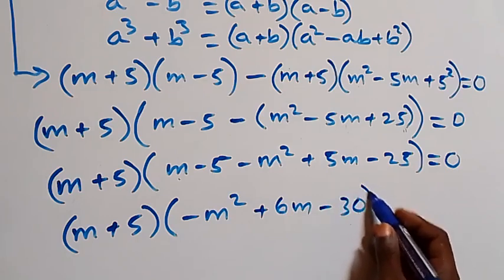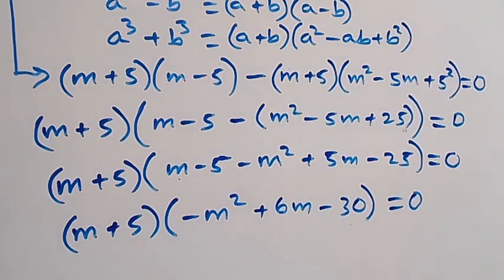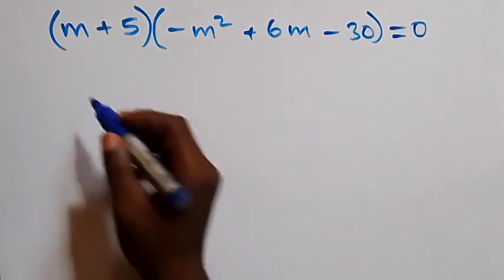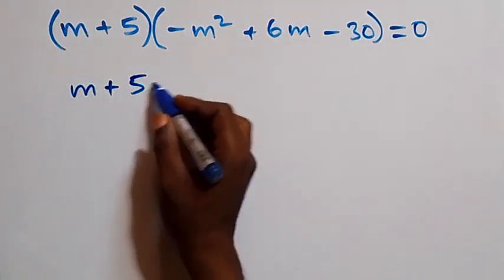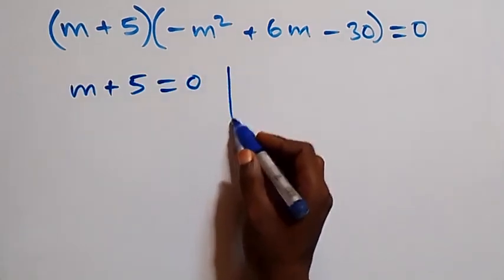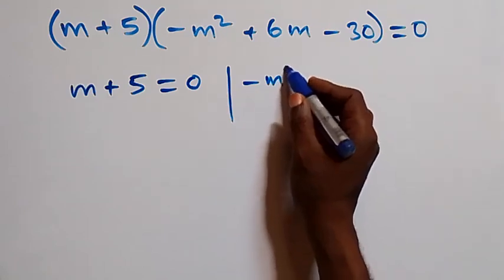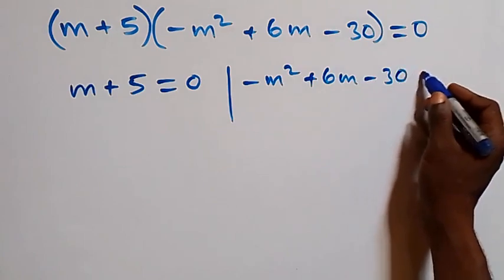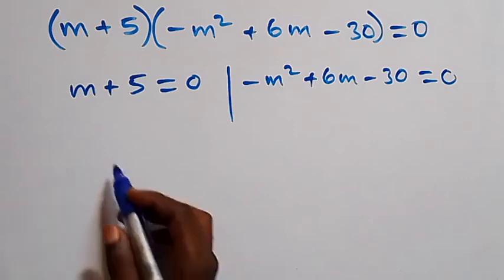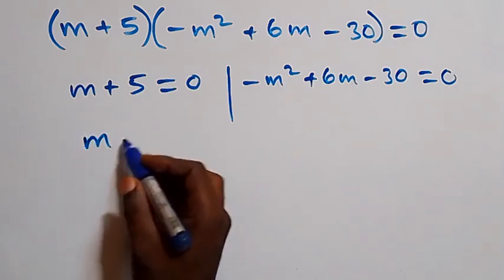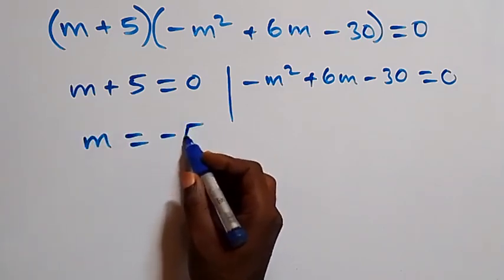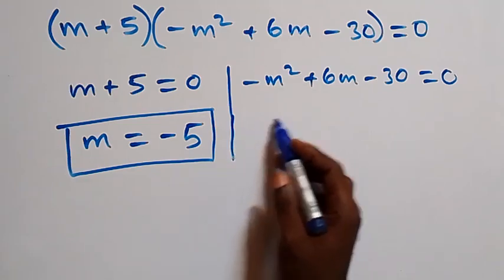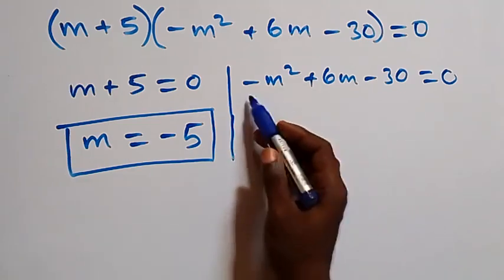We have two possible cases: m plus 5 equals zero, or minus m squared plus 6m minus 30 equals zero. From the first case, m equals negative 5, which is a real solution.